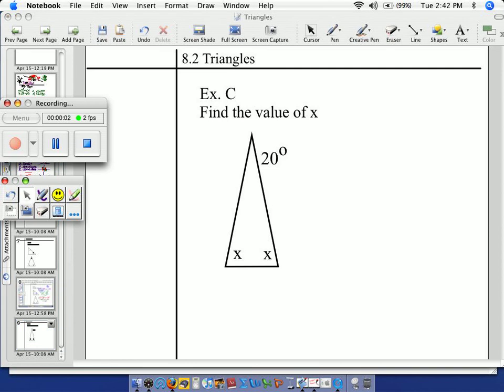So an example C, what is different is we have only one angle we know. One of them is 20. The other two we don't know.